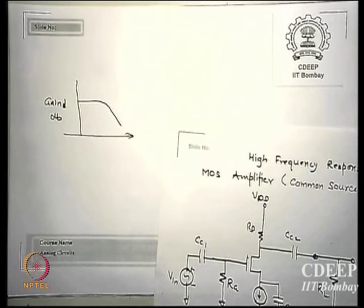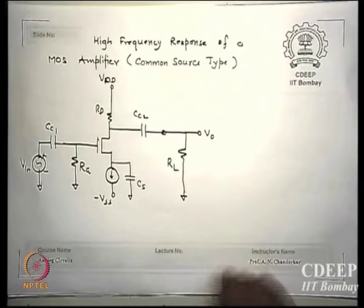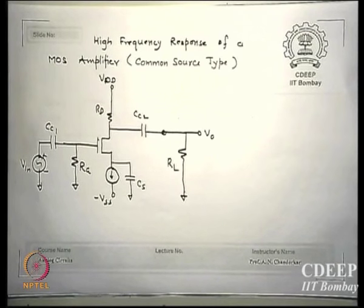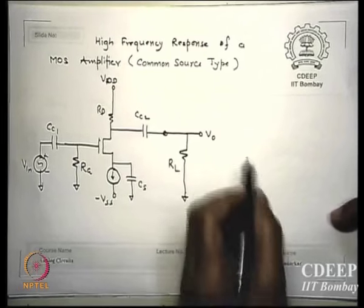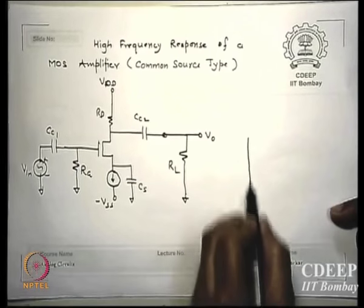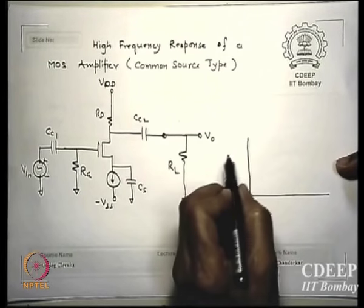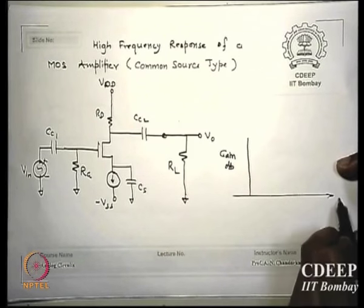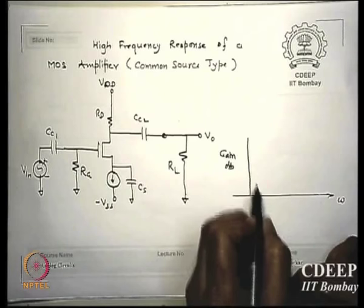In any AC-coupled amplifier, there are capacitances which give you a band-pass property — both a high-pass and low-pass characteristic. Therefore there will be a lower cutoff as well as a higher cutoff. A frequency response plot of gain versus omega shows these cutoff frequencies clearly.